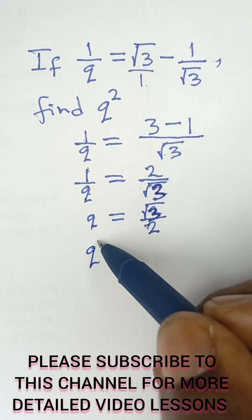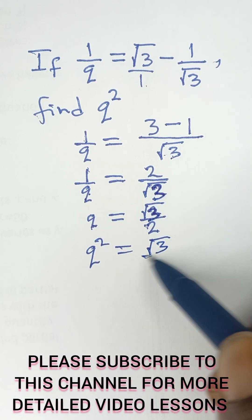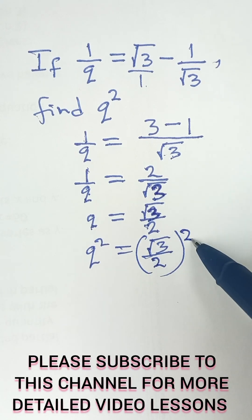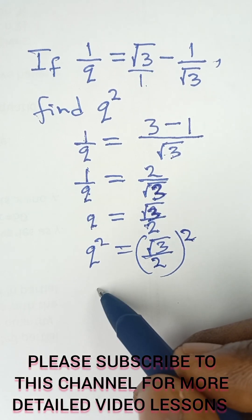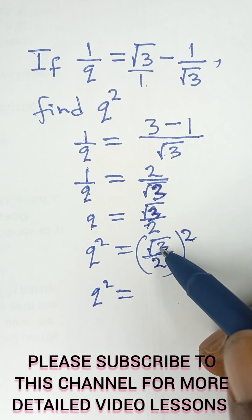Q squared will be equal to root 3 over 2, all squared. And then that will give us Q squared is equal to this square affects root 3.